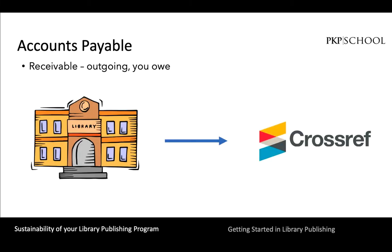On the other hand, accounts payable is the amount billed and what you owe as a library publisher for the goods and services you've received. An example of this might be membership fees or DOI registration to CrossRef. When looking at your accounts payable, you might want to run a history of payments report to see what your previous expenditures were.